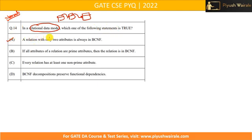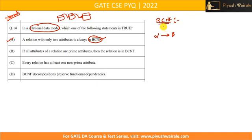The first option is: a relation with only two attributes is always in BCNF. First you should know what BCNF is. BCNF stands for Boyce-Codd Normal Form. The condition for BCNF is: if alpha determines beta is a functional dependency, then the left-hand side must be a key for every functional dependency.